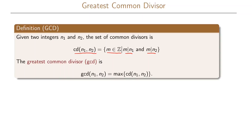Looking at this set of common divisors, we say that the greatest common divisor, abbreviated as GCD, is the gcd of n1 and n2 — defined as the maximum of the set of common divisors of n1 and n2.